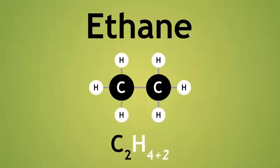Plus 2 equals 6, so 6 hydrogens, C2H6. Using this, we can find the molecular formula of other alkanes.